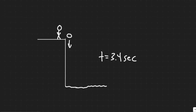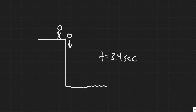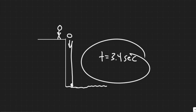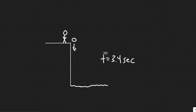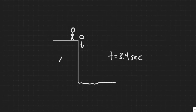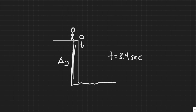So we have this guy dropping a rock, it goes down and hits the ocean. The time from him dropping it, going down, hitting the ocean, and then the sound traveling back up is a total of 3.4 seconds. What we're trying to find is delta y — the change in height, or basically how high the cliff is.